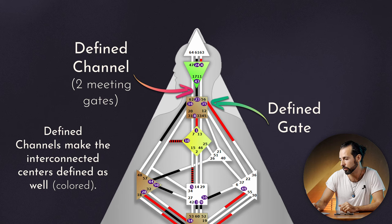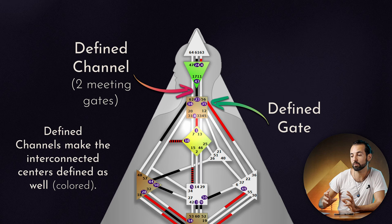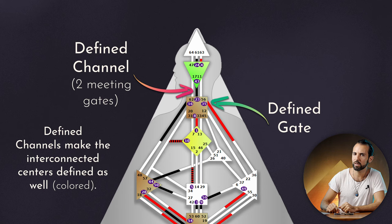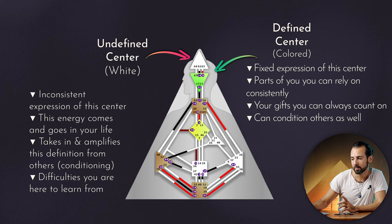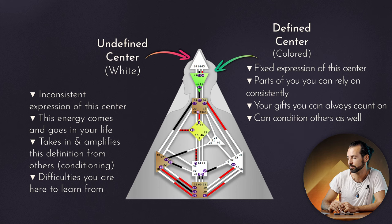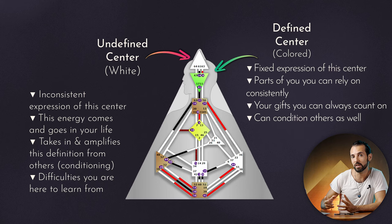Or you might have both — like in this case the gate 1 and the gate 8. I have both of those activations and that forms a channel. You might have a defined gate or a defined channel, and this makes a big change in how you should handle the power of those gates. Whenever you have a channel, the centers that are interconnected by it become defined — they are colored in. Some centers are in white and some are colored. Whenever there is a channel there's an activation, there's a definition. When a center is defined it has a fixed expression — it's something you can rely on, always present, something you can trust.